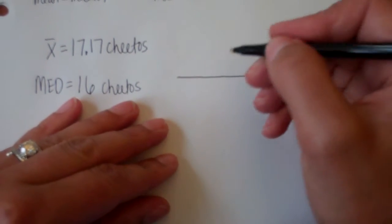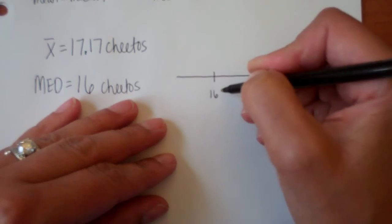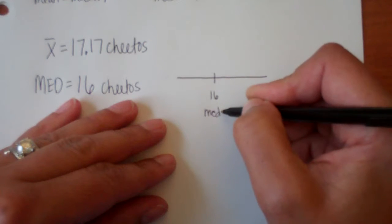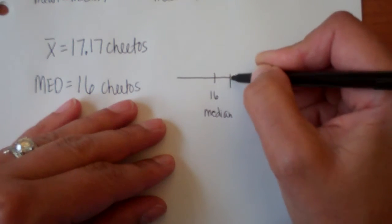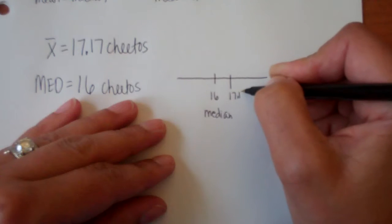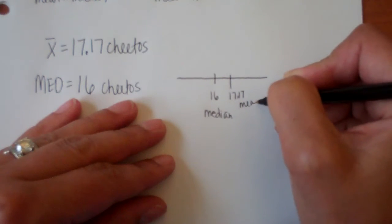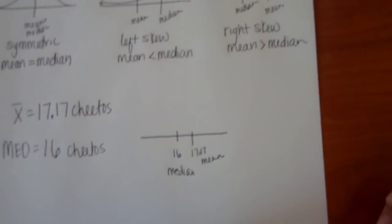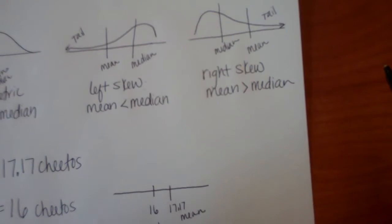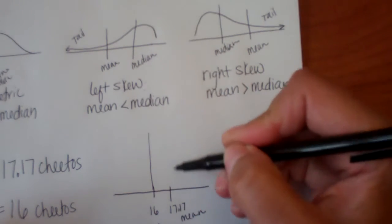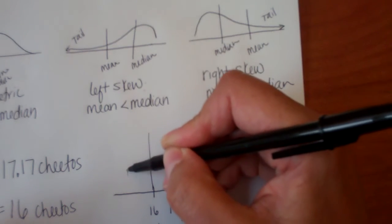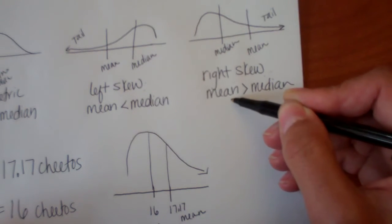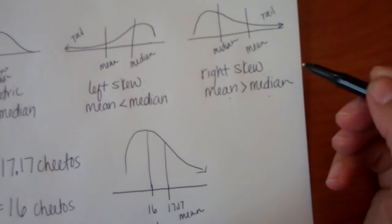So if we were to sketch this out, not even graph it out, the median is going to be lower than our mean. So let's write this out: median. And 17.17, this is our mean. So let's look. Our median is down towards the lower numbers and our mean is up towards the higher numbers. So it looks something like this. So I'm thinking this is going to have a slight right skew because our mean is greater than our median.